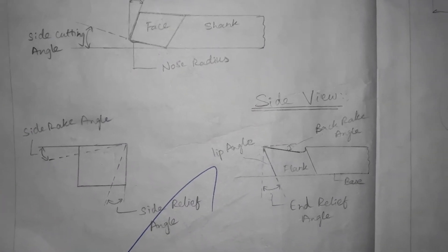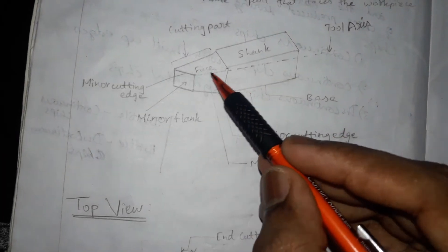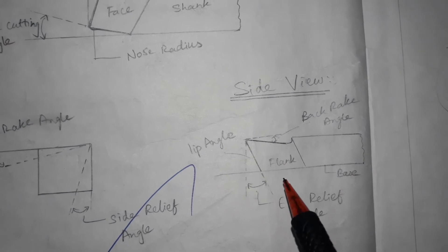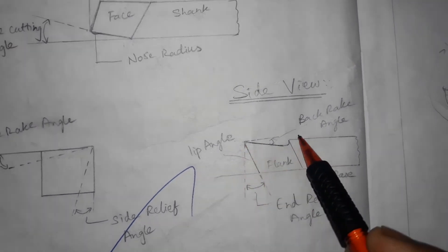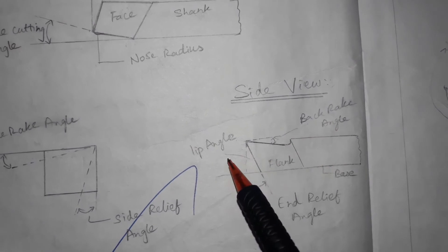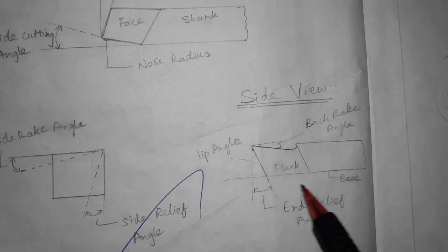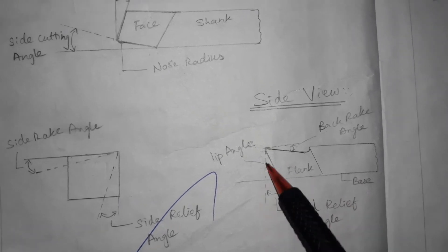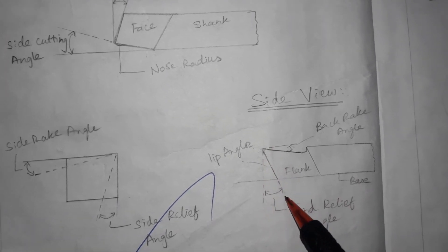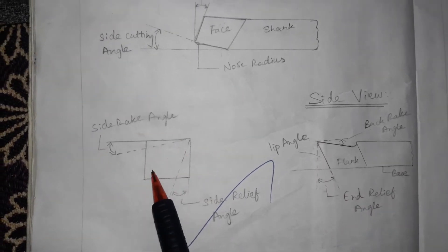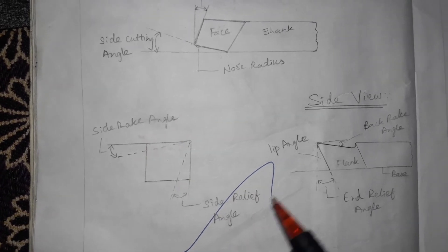Now looking at the side view — this part shows the flank. The side rake angle and side relief angle are visible here. The side relief angle is the angle between the normal of the base and the flank. This shows both the side rake angle and the side relief angle.